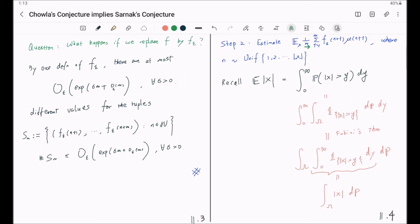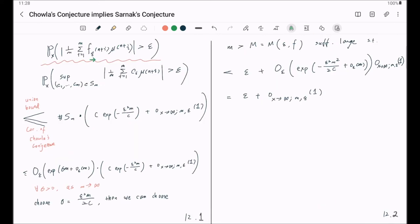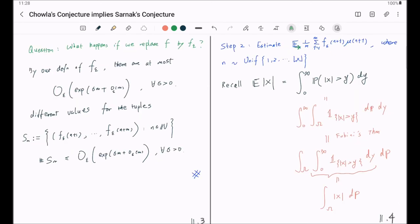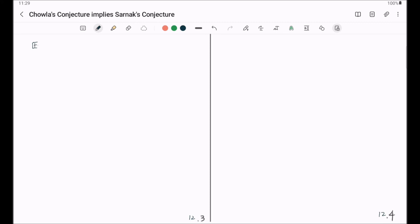This is an estimate we get for this probability. Now we return to the bound for this. With this tail bound, we can now give an estimate for this expectation, thanks to this formula. So the expectation of average, where this N is drawn uniformly randomly from the integers 1 through the floor of X. We first put the absolute value sign inside.